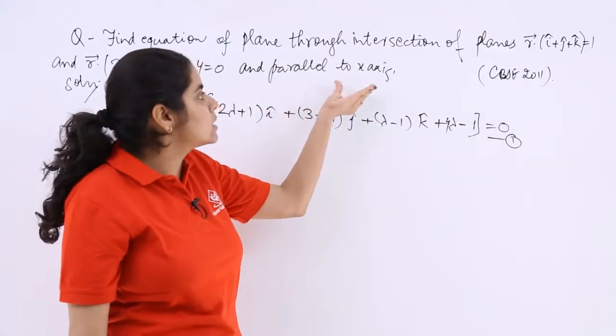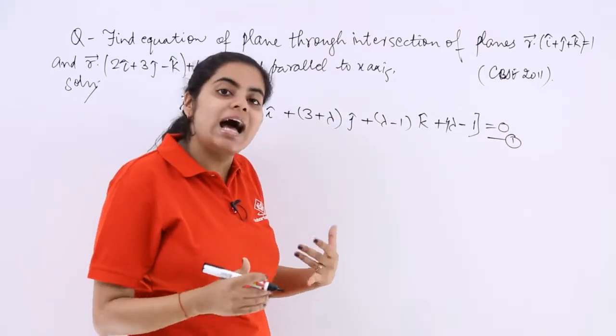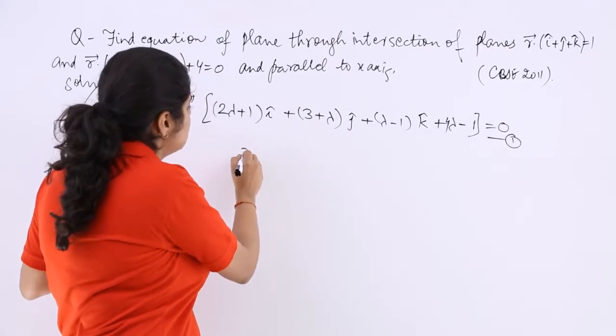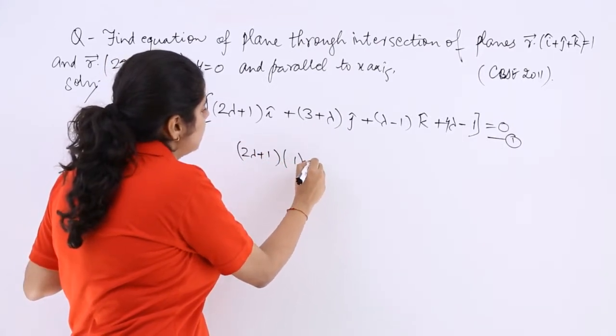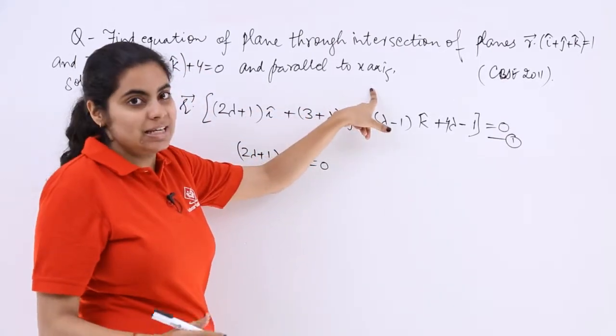We have been asked to make it parallel to the x-axis. The x-axis has i cap as its unit vector. So we have 2 lambda plus 1 multiply by 1 equals 0 for parallelity with the x-axis.